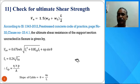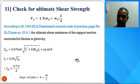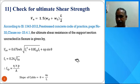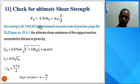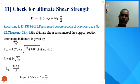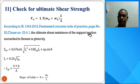Even so, it is necessary to check the flexural shear capacity of the beam — cracking flexure at midspan and uncracking flexure at the support section. First, we find out the maximum shear force equal to 1.5 × (WD + WL) × L/2 using the limit state of collapse. According to IS 1343-2012, page 32, clause 23.41, the ultimate shear resistance of the support section (uncracked in flexure) is given by this formula.